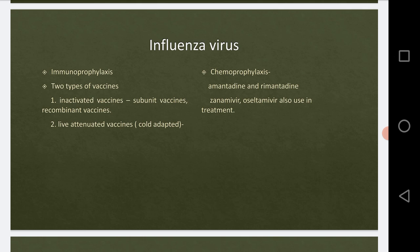As we saw in the earlier lecture, neuraminidase is responsible for facilitating the infection by reducing the viscosity of the mucus lining of the respiratory tract. These drugs block neuraminidase so that even if the virus enters our body and we take this drug, it will block the neuraminidase and further infection will not occur.